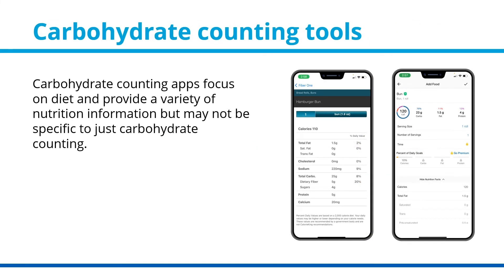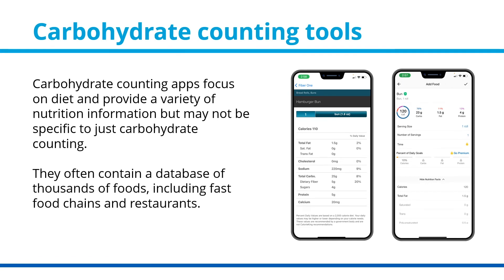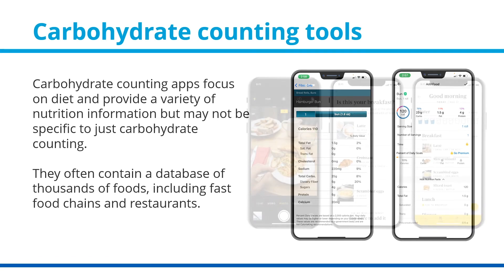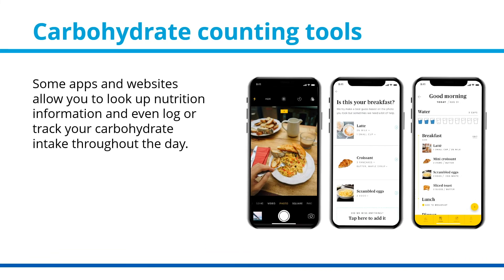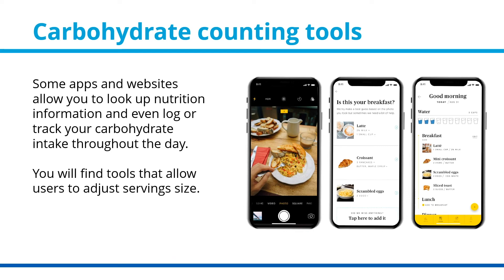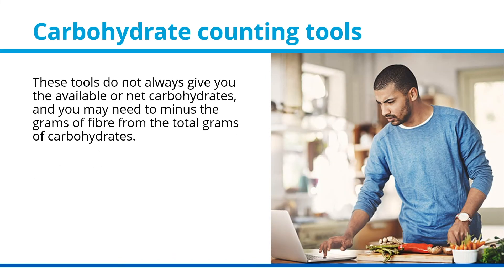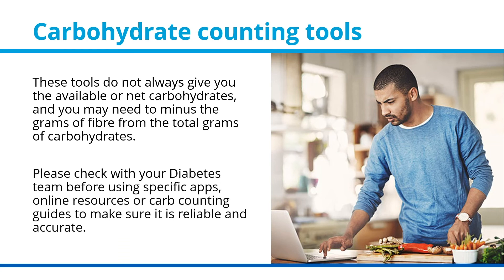Carbohydrate counting apps focus on diet and provide a variety of nutrition information, but may not be specific to just carbohydrate counting. They often contain a database of thousands of foods, including fast food chains and restaurants. Some apps and websites allow you to log or track your carbohydrate intake throughout the day, with tools that allow users to adjust serving size. These tools do not always give you the available or net carbohydrates, and you may need to subtract the grams of fiber from the total. Please check with your diabetes team before using specific apps, online resources, or carb counting guides to make sure they are reliable and accurate.